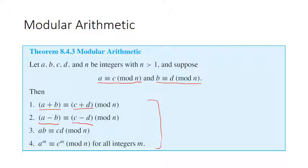You can also do subtraction: a minus b will be congruent to c minus d. You can multiply them: a times b will be congruent to c times d. And you can even raise both sides of a congruence to the same exponent. These are all basically the same things you can do with equations, and you can do all of them with modular arithmetic — which is really, really useful.